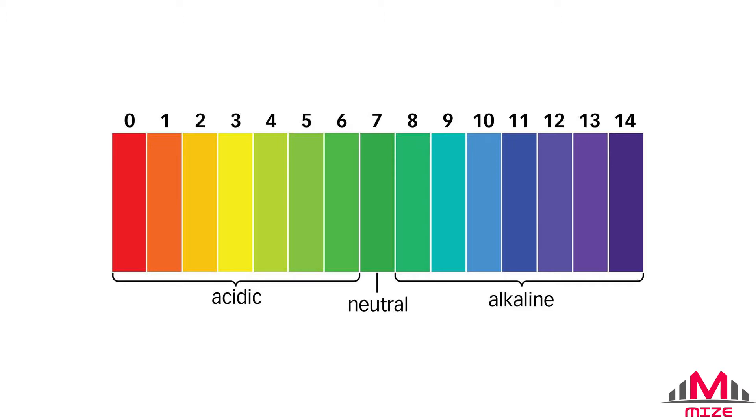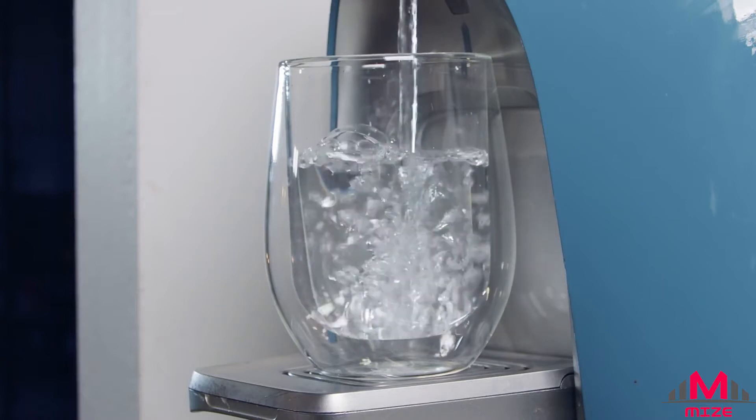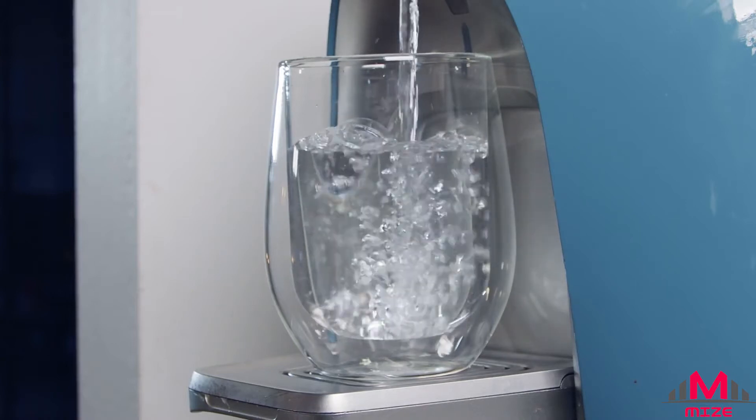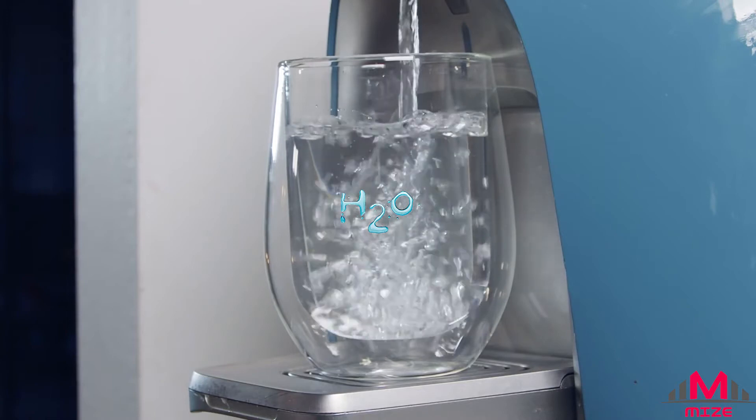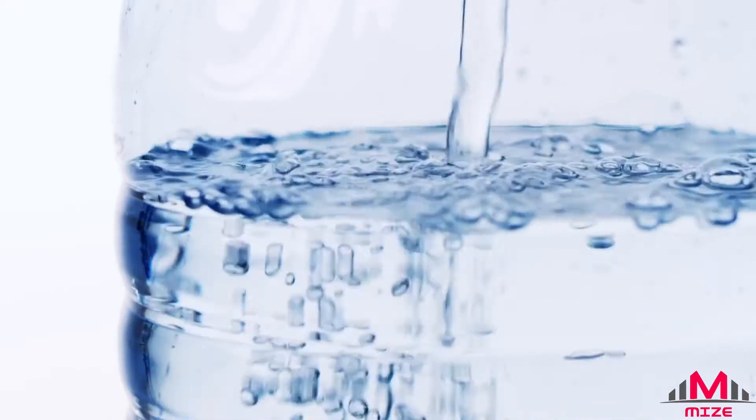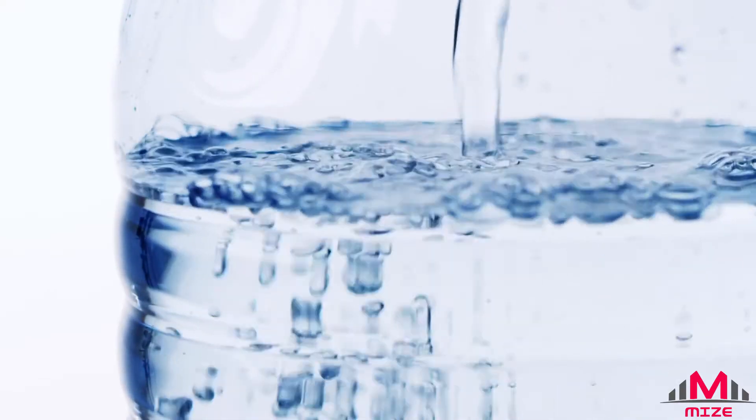But what are we measuring? Let's start in the middle. Pure water has the chemical formula H2O and is made from two bonded ions: hydrogen bonded to one hydroxide. The pH is neutral.